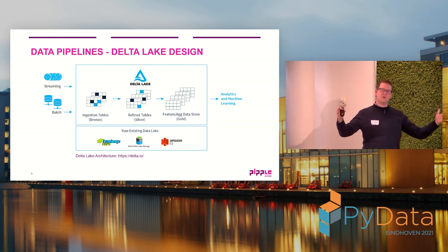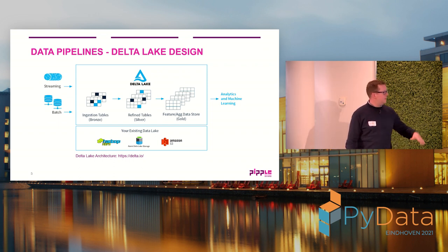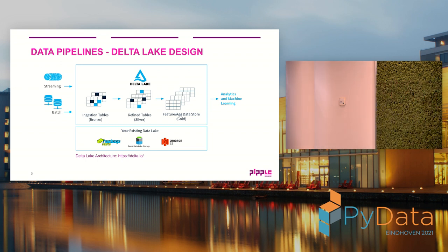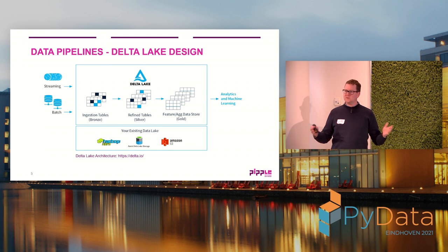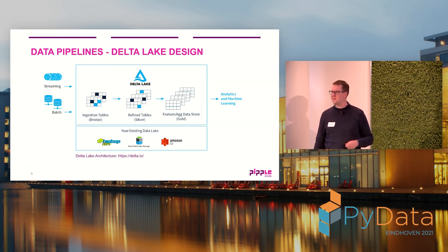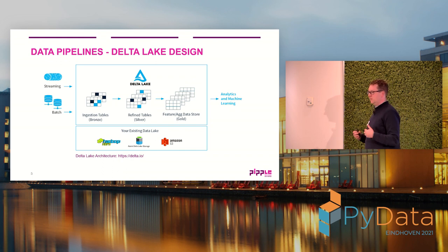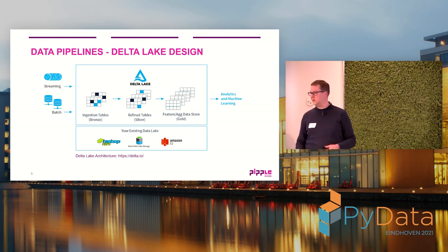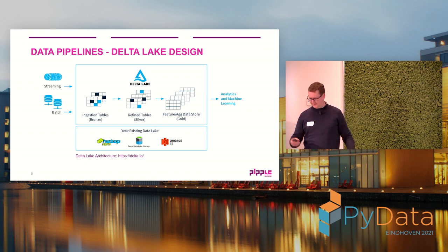Any data platform or data lake will have certain sections. Delta Lake calls them bronze, silver, and gold, but others say staging, raw, or landing zone. We all agree you start with raw data, move it, increase quality, and extract the information you need. Finally, what's called gold in this model is the dataset you give to another team — most often the data science team — but it could also be reporting, a simple Excel list, or anything.